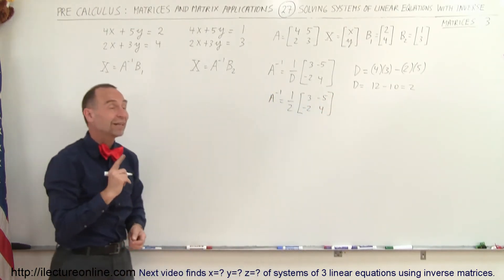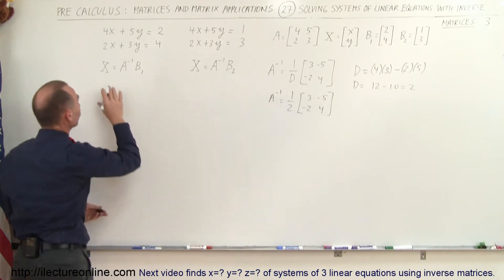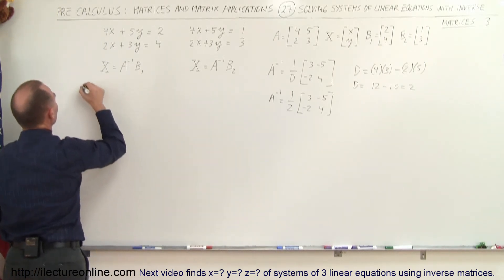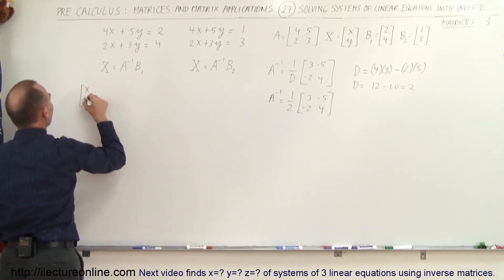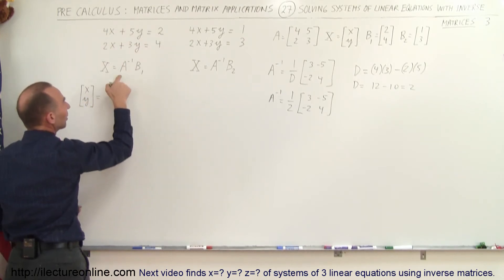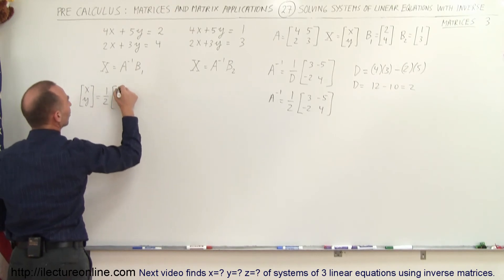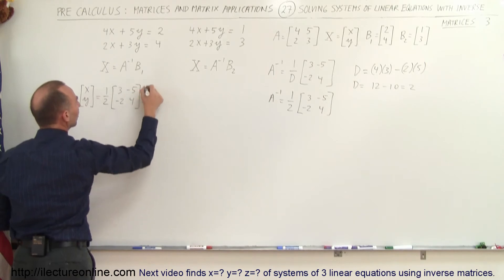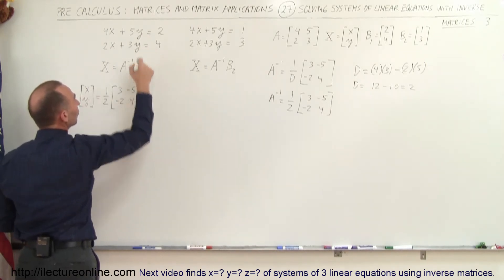So now that we have that we can very easily solve for the two solutions. For the first solution, the values for x and y that will satisfy this system of linear equations is equal to the inverse of A which is 1 half times 3, minus 5, minus 2, and 4, multiplied times the B1 matrix which is 2 and 4.